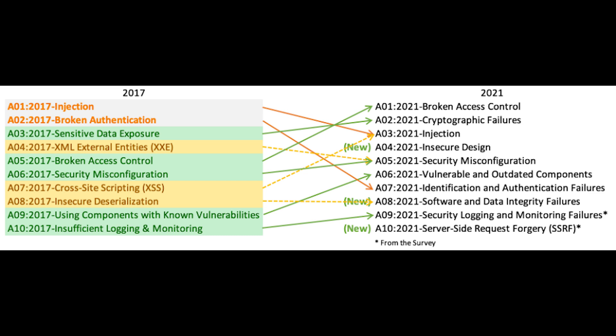Next, we have insecure design. This is a broad category representing different weaknesses. It focuses on risks related to design and architectural flaws. Good development lifecycle and using a library of secure designs, and using threat modeling, and so on, are good practices to ensure you prevent insecure design.